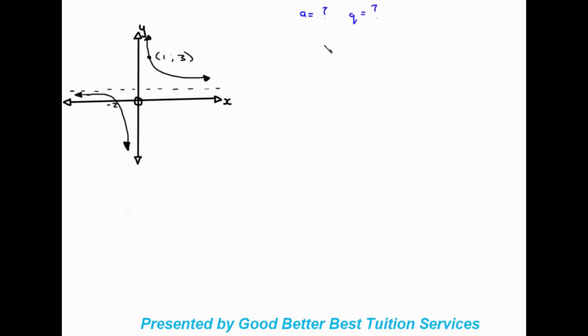Moving to the next example, things start to get a bit trickier. We are given a point in the second quadrant and a point in the third quadrant, which is the x-intercept. There is also an asymptote shown, but we are not given the value of q. So we have two unknowns: a and q. We know the standard form is y is equal to a over x plus q.